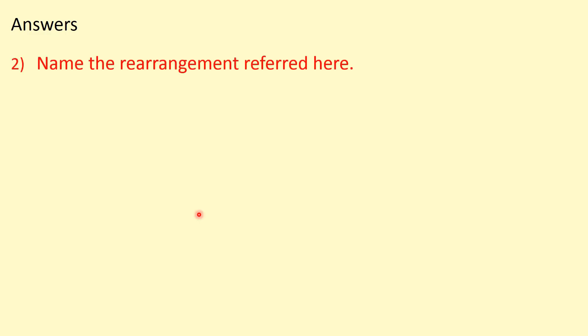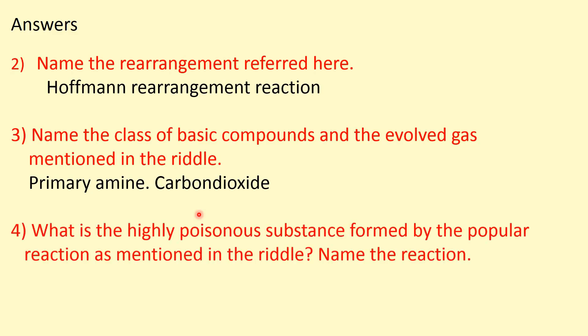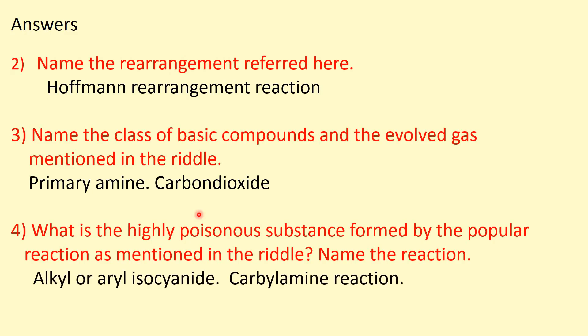Now let's see the answers to the remaining questions. Question 2: name the rearrangement referred here — answer is Hofmann Rearrangement reaction. Question 3: the class of basic compounds is primary amine, and the evolved gas is carbon dioxide. Question 4: the highly poisonous substance is alkyl or aryl isocyanide, which is the product of the carbylamine reaction, and the name of the popular reaction is the carbylamine reaction.